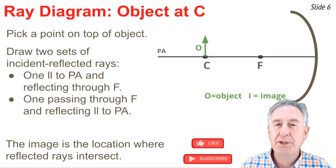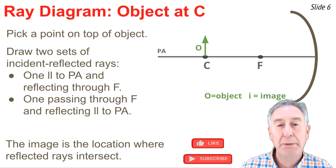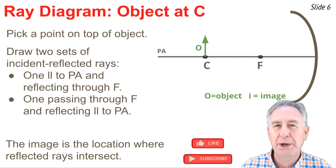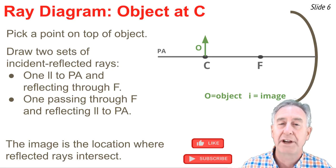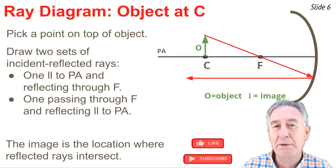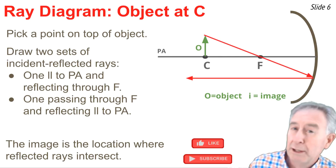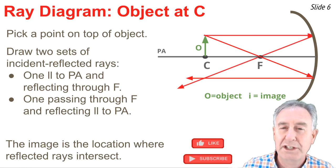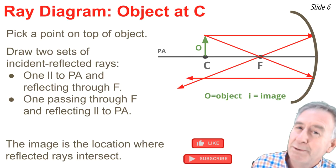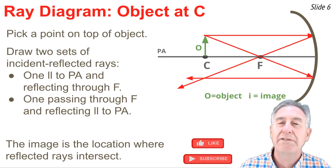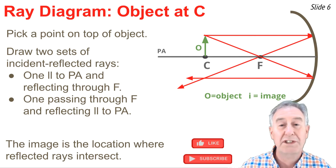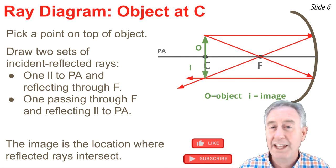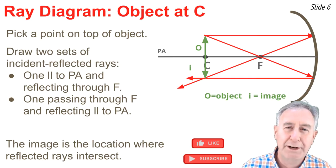My second ray diagram will be for an object positioned at the center of curvature. I'll repeat the same three-step process: pick a point on the top of the object, then draw two sets of incident and reflected rays. The first set is an incident ray traveling through the focal point and it reflects parallel to the principal axis. The second set is an incident ray that travels parallel to the principal axis and reflects through the focal point. These two reflected rays intersect, and their intersection point is the image of the top of the object. The complete image extends from the principal axis down to this point, exactly at the center of curvature.